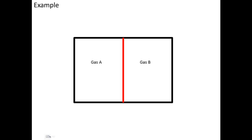I have two containers which are separated by a partition. The partition at first is fixed, that means it's not movable. The left container is filled with gas A, and the right container is filled with gas B.